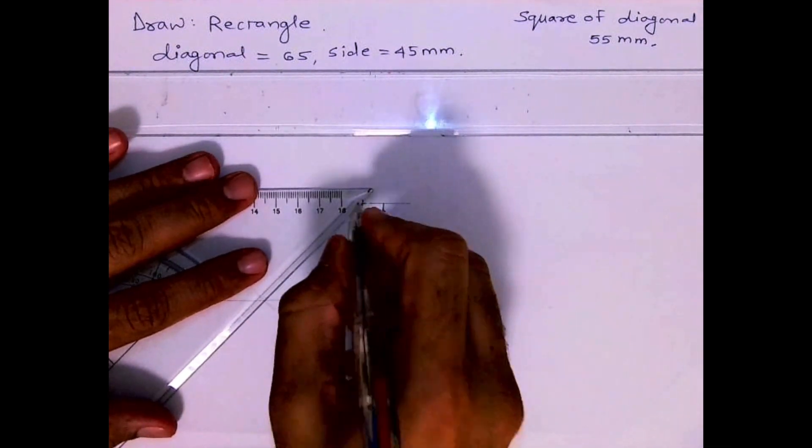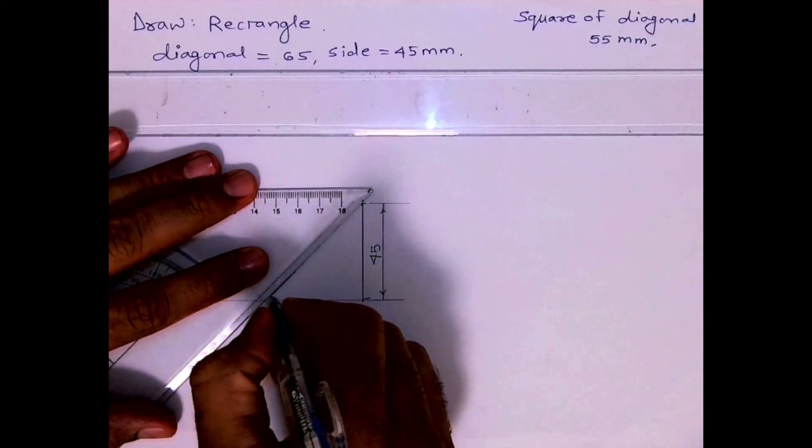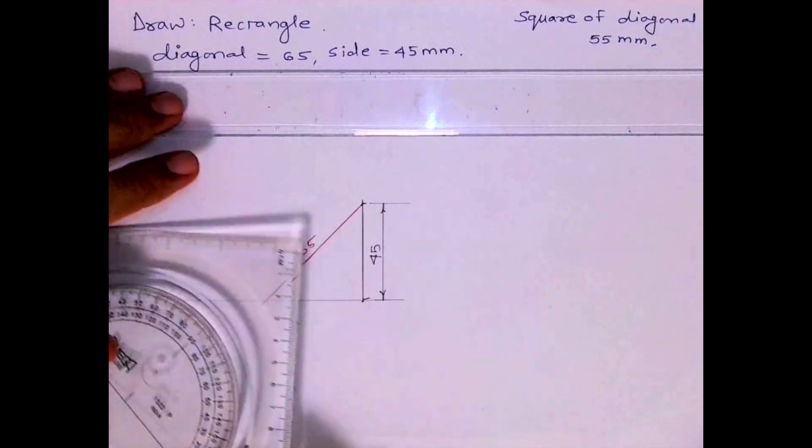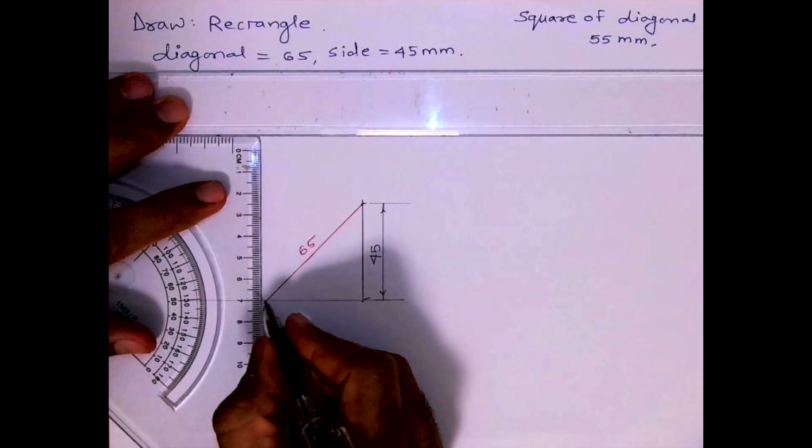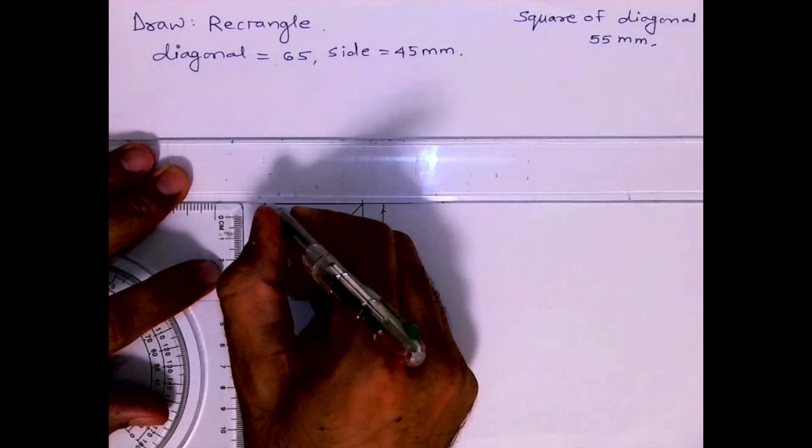So you'll get this diagonal. Now after that, you draw vertical line from here and horizontal line from here, so you'll get a rectangle.